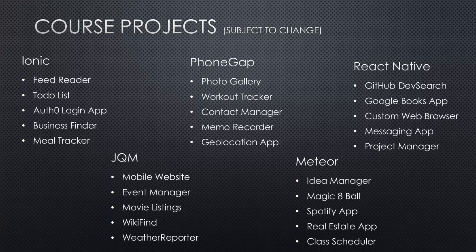Here's a list of projects planned for the course — subject to change. For Ionic: a newsfeed reader, a to-do list, a login with the Auth0 service, a business finder app, and a mail tracker app. For PhoneGap: a photo gallery, a workout tracker, a contact manager that implements functionality from your phone's contact list, a memo voice recorder, and a geolocation app.